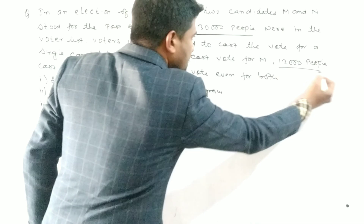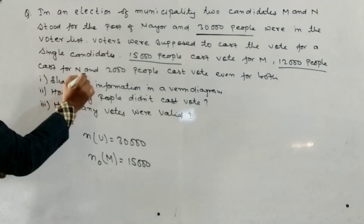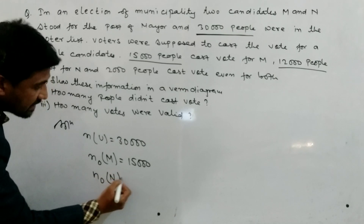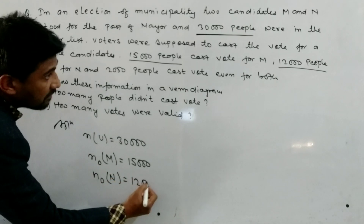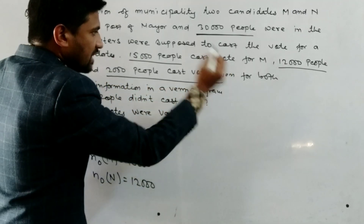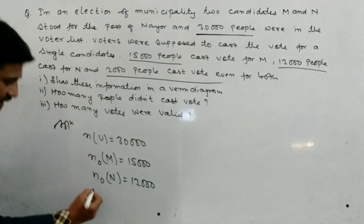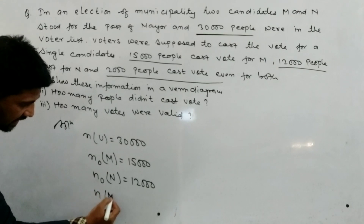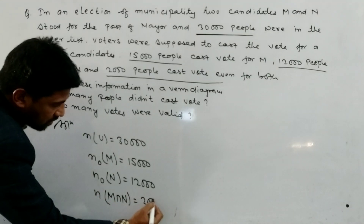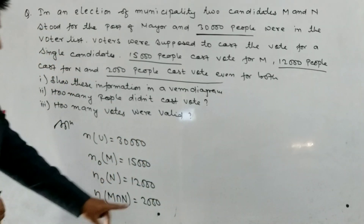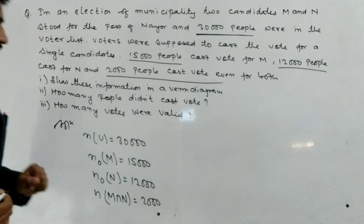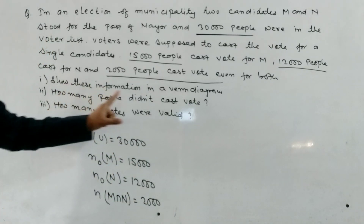Similarly, 12,000 people cast vote for N only, so we write n(only N) = 12,000. Then 2,000 people cast vote for both, so we write n(M ∩ N) = 2,000. This intersection value represents invalid votes, because casting for both is not allowed.